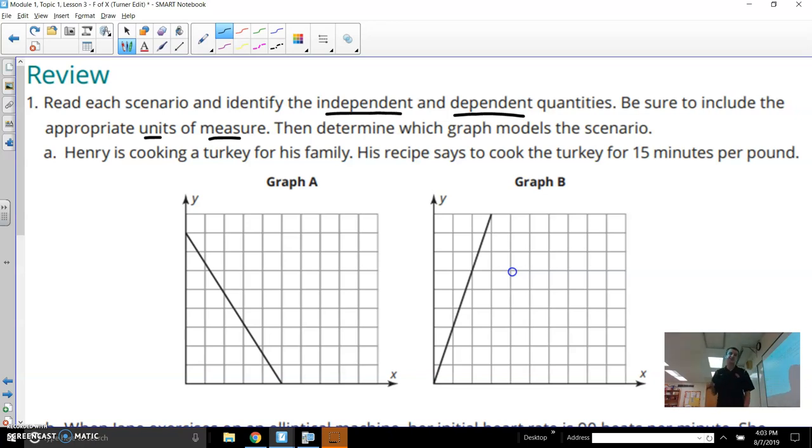It says Henry is cooking a turkey for his family. His recipe says to cook the turkey for 15 minutes per pound. So the idea is that if you were to make a table in your mind of what this is kind of going through in terms of the story, I kind of want my x idea to be the independent variable and the y to be the dependent variable. So in this scenario, what determines what? Is it the weight of the turkey that determines the time or does the time really determine the weight? I'm thinking that honestly, it's the weight that you get to decide. You get to pick out the turkey. Is it a one pound turkey? Is it a two pound turkey? Is it a three pound turkey? You get to choose how big the turkey is. However, you don't get to choose how long you have to cook it for it to be cooked correctly, because there's a rule here, 15 minutes for every one pound.